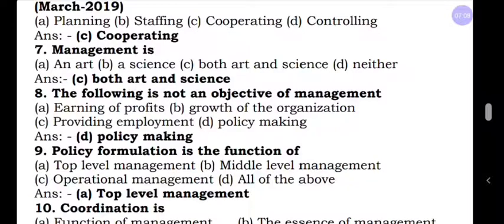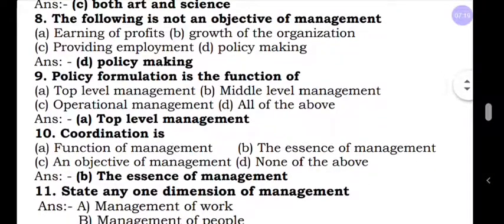Question number nine: Policy formulation is the function of — A, top level management; B, middle level management; C, operational level management; D, all of the above. To guess the answer in MCQ, first delete the wrong options. All of the above is wrong, operational level is wrong, middle level is wrong. The correct answer is top level management.